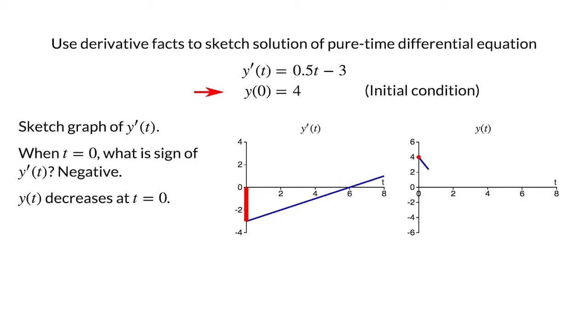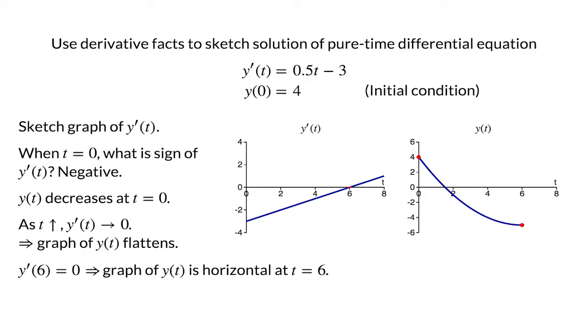As t increases, what happens to the derivative y'(t)? The derivative gets closer to zero. Since the magnitude of the derivative shrinks, the steepness of the graph of y(t) decreases. The graph flattens out until finally, when we reach t equals 6, the derivative is zero. The result is that the graph of y(t) must be horizontal at t equals 6.